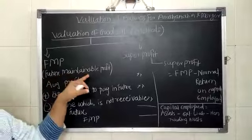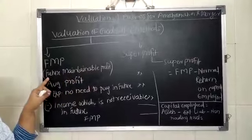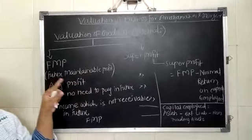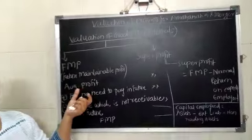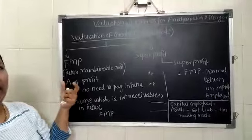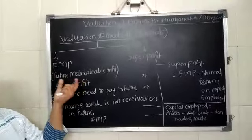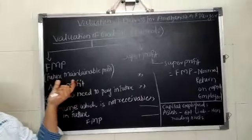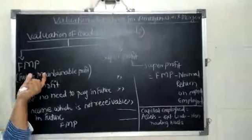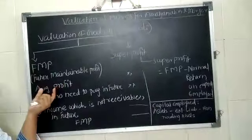FMP is a future maintainable profit. This profit means when the businessman is taking over the business of another company, at that time they are thinking what kind of returns or what exactly the average profit they are going to, or the future profit they are going to earn from this business.